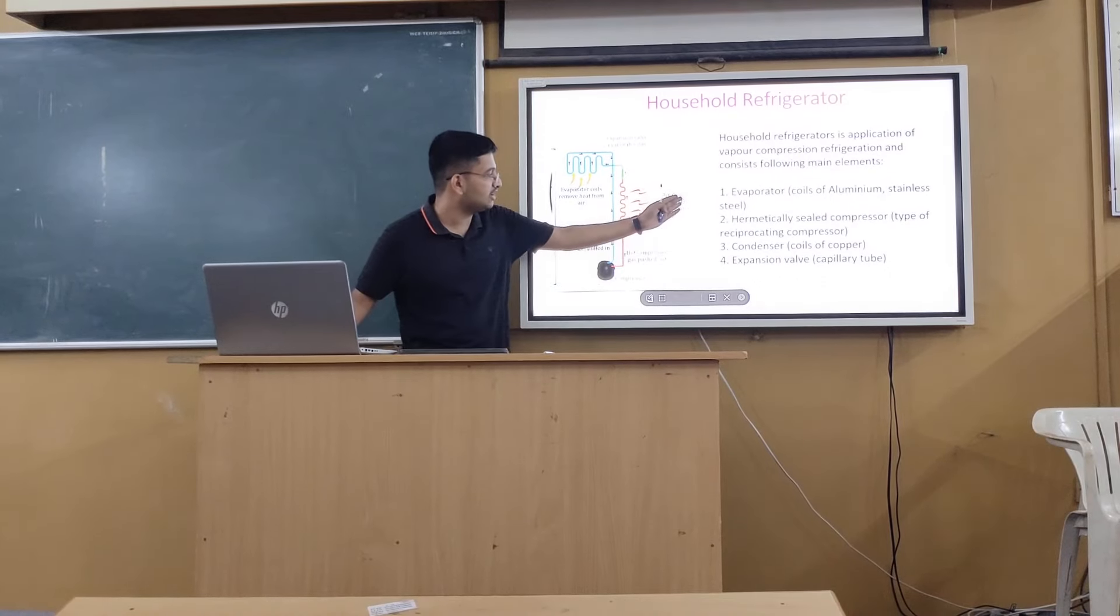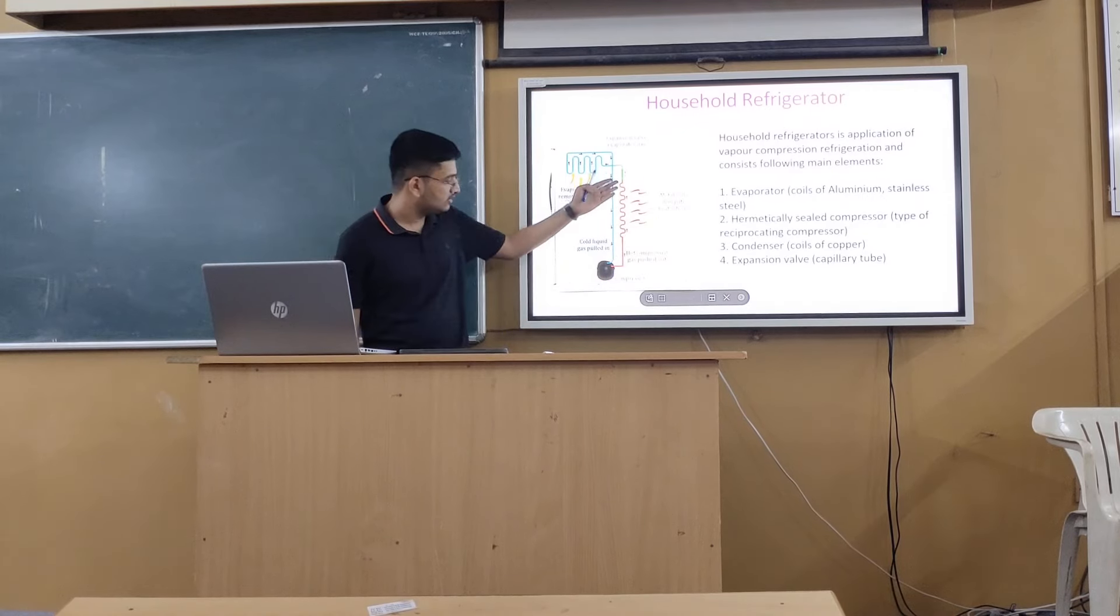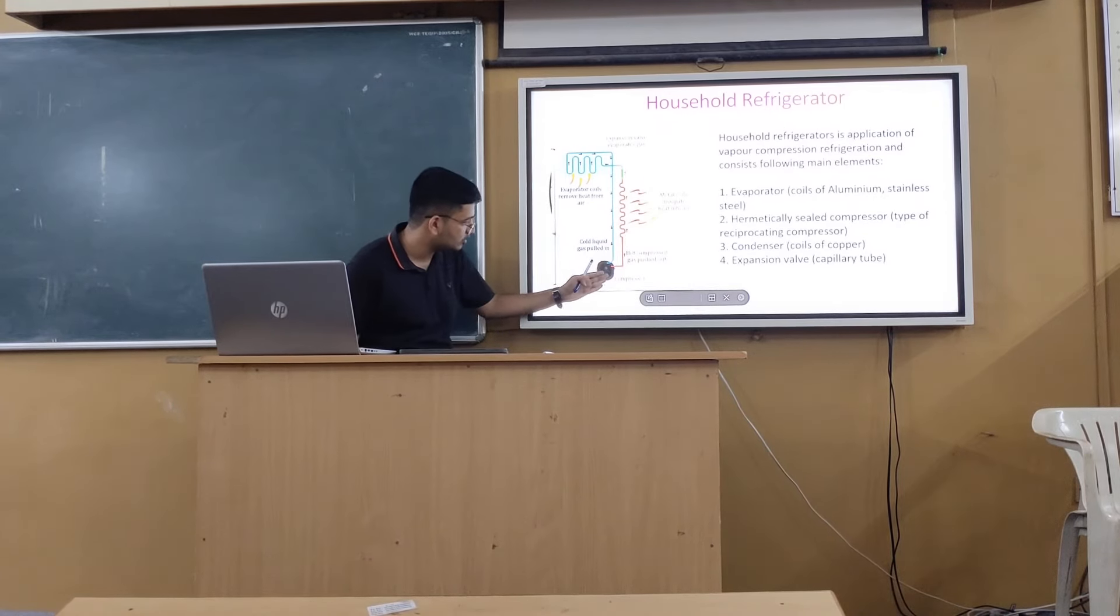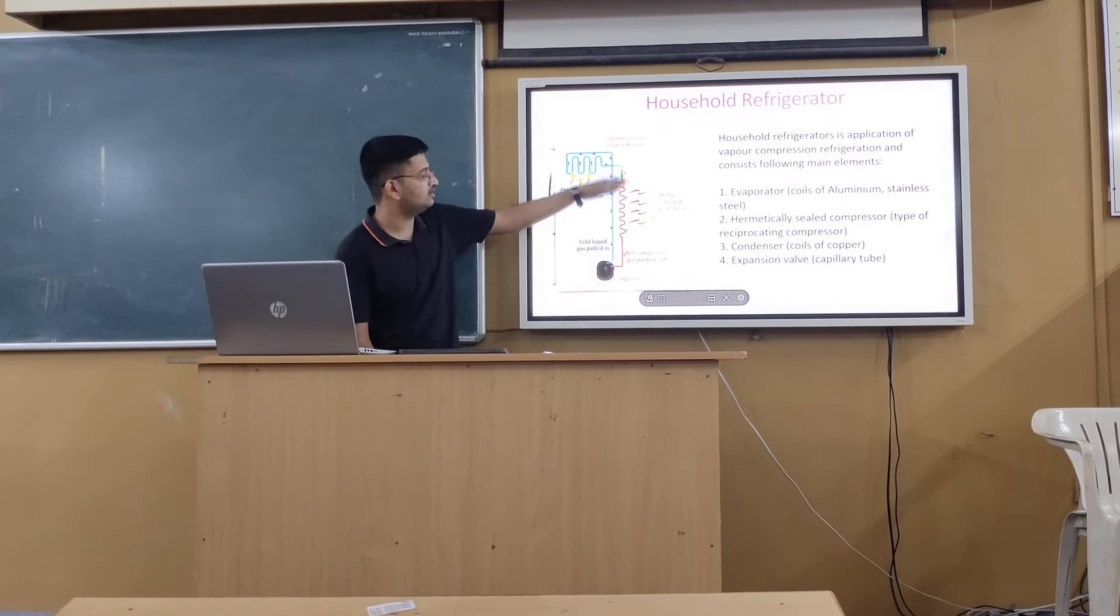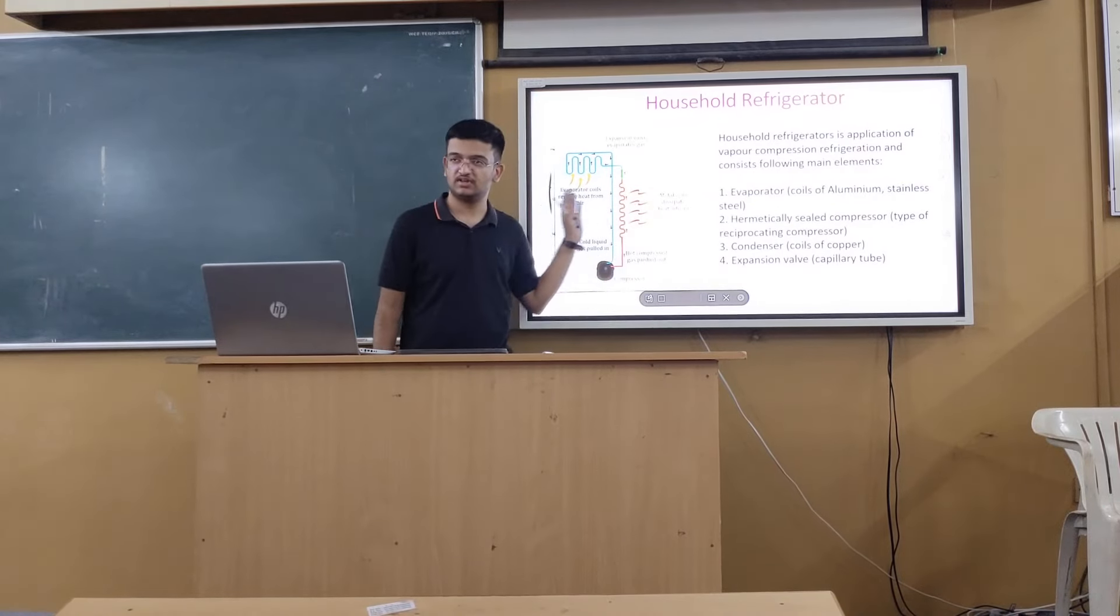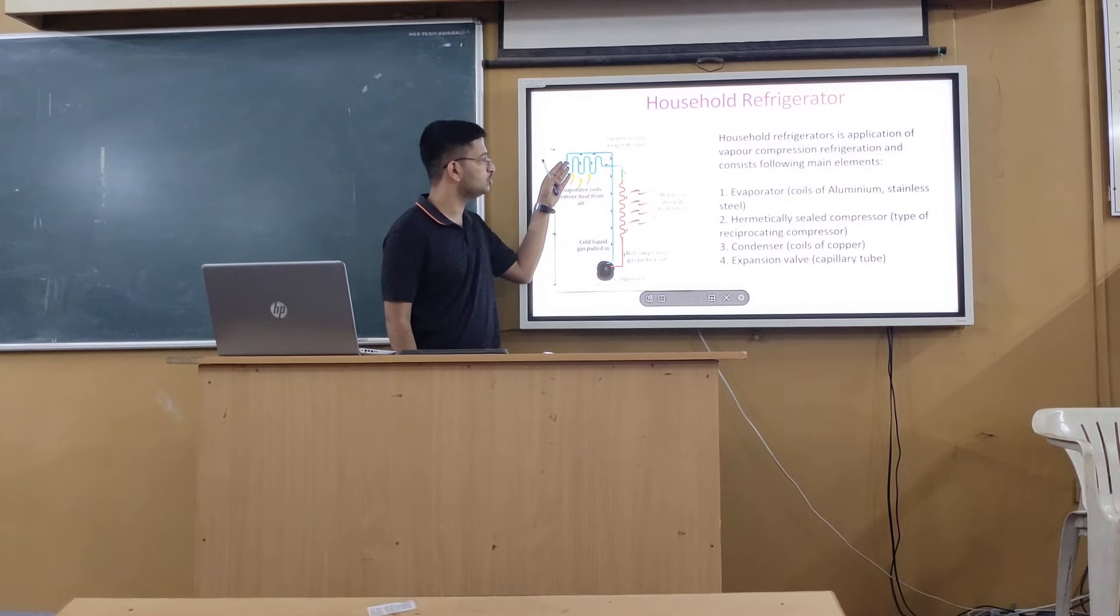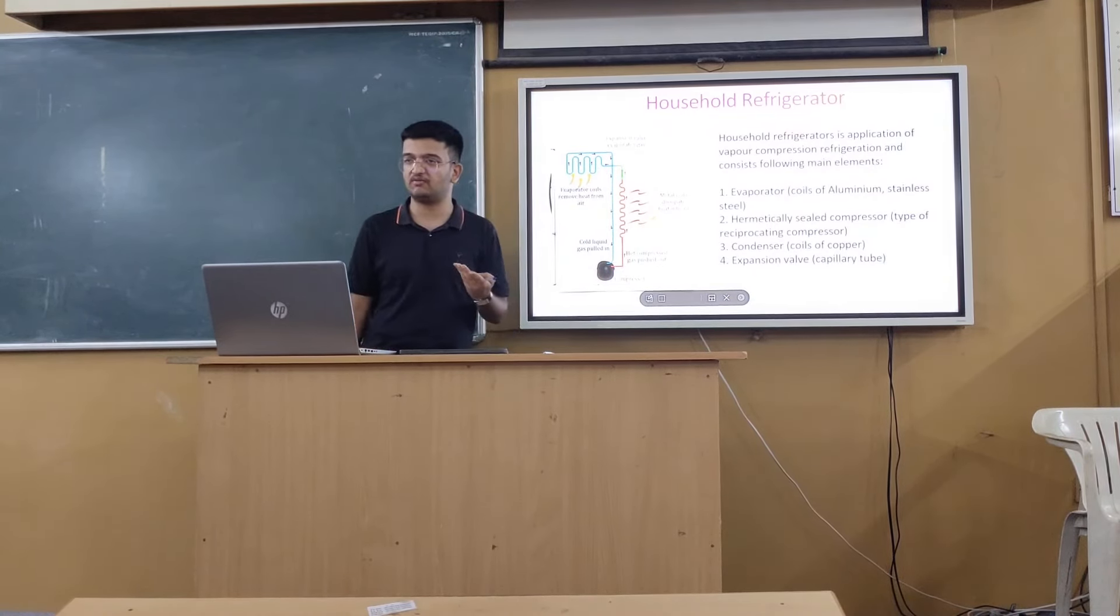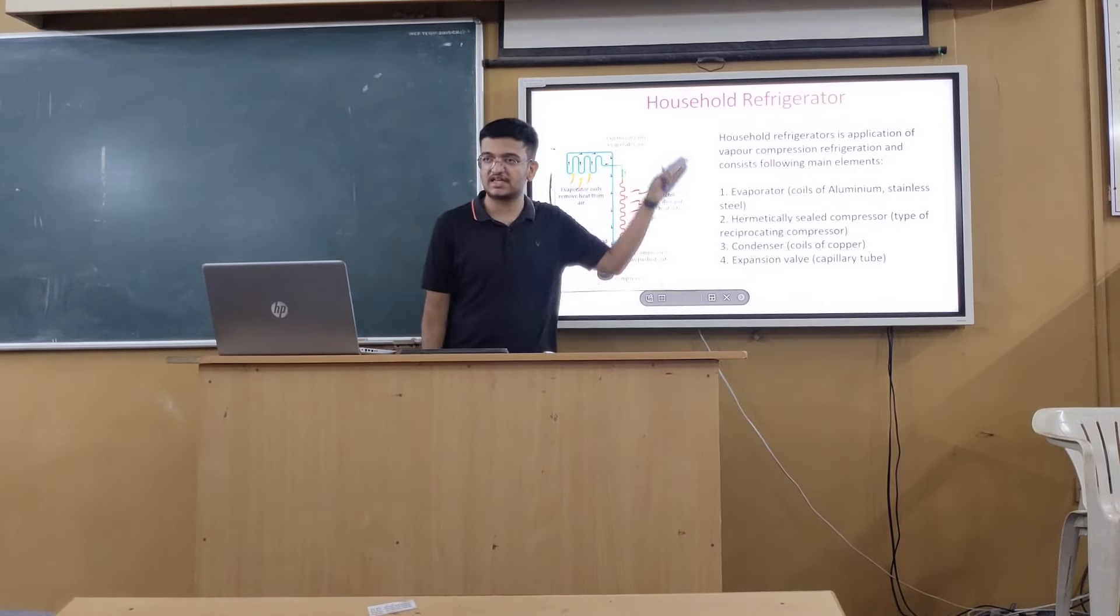The coils are there which dissipate heat into the air, that is the external environment. Then that gets into the compressor which increases pressure. Then to do the heat transfer, it cools down. Again goes into the actual cooling compartment where cooling is required. Again the cycle goes on.